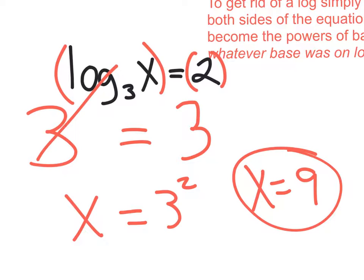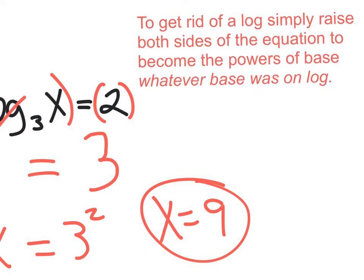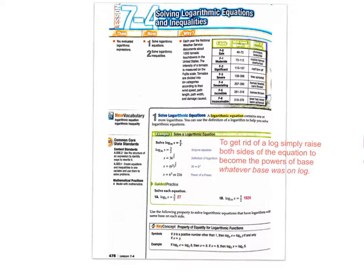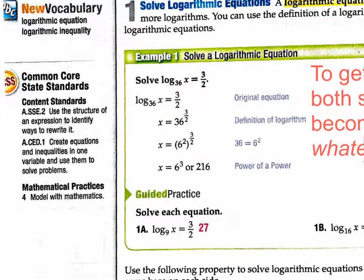When we're solving equations, if you have a log and you want to get rid of it, you're going to raise both sides of the equation to become powers of the base that you had on your logarithm so that the log could cancel out. So maybe you want to jot that down. Let's turn to the book, page 478, and go through the examples. The book doesn't explain it that well, which is why I'm explaining it to you guys right now.